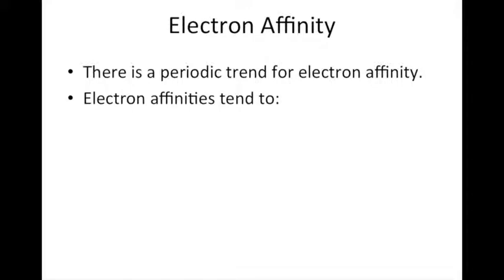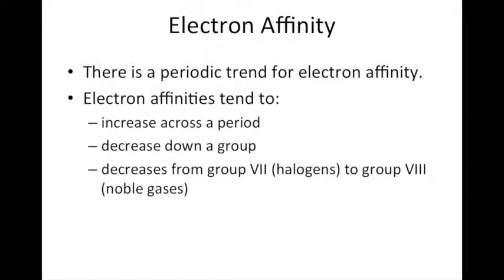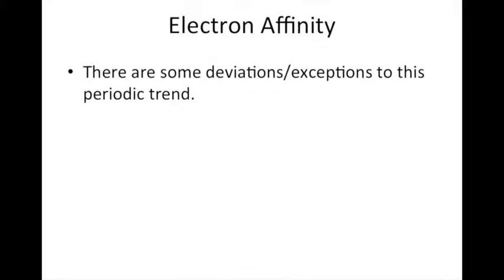For example, electron affinities tend to increase from left to right across a period, they tend to decrease as we move down a group, and they decrease when you go from a halogen to the noble gas in that same period. However, there are some deviations and exceptions to these periodic trends, and that's what we want to discuss and explain in this particular video.